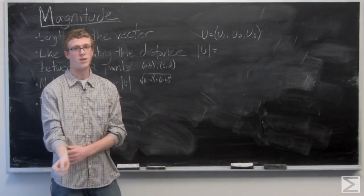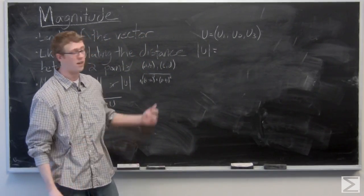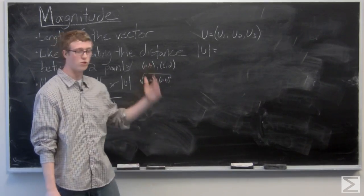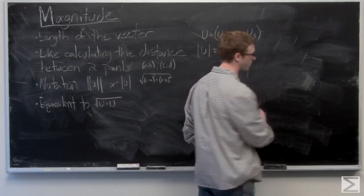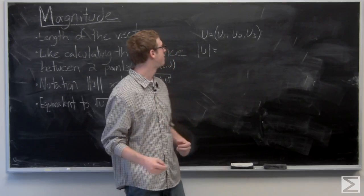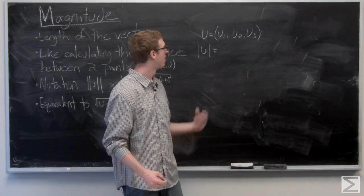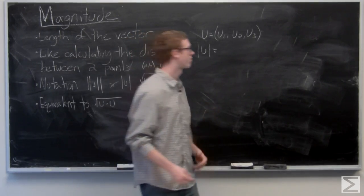Similarly, the magnitude of a vector, this is in three space, u1, u2, u3. It's going to just be the square root of u1 squared plus u2 squared plus u3 squared.